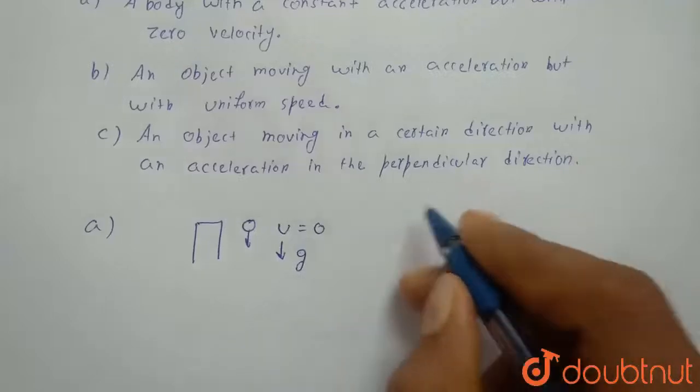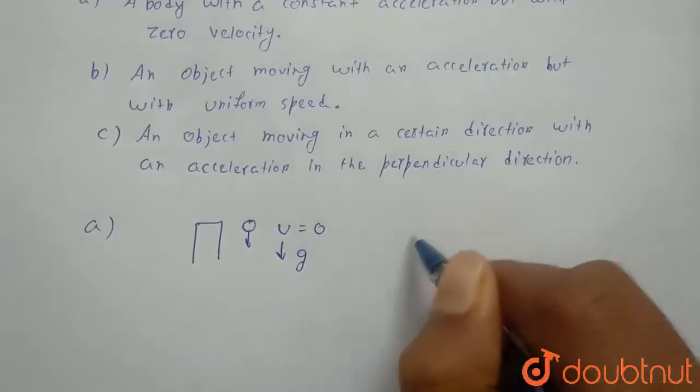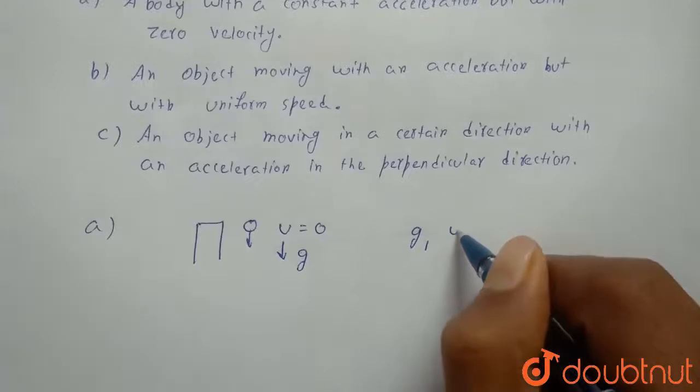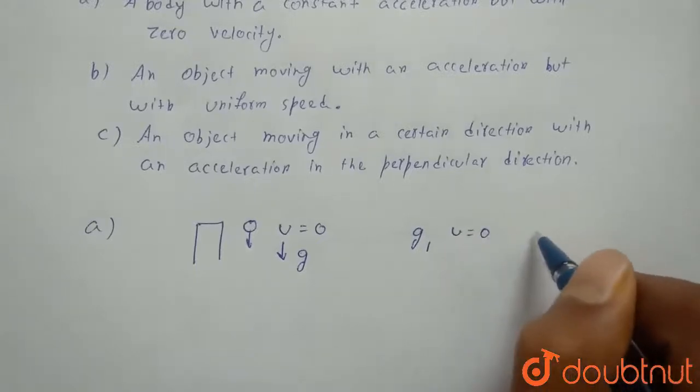So it has constant acceleration g but initial velocity is zero. So this case is possible.